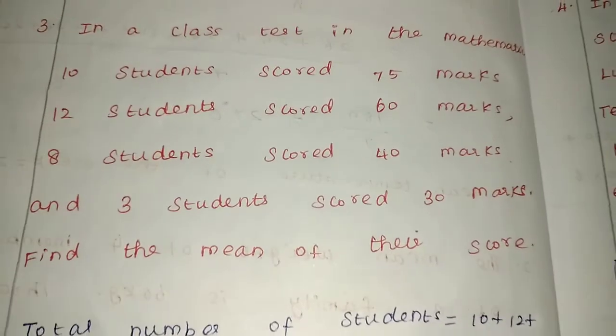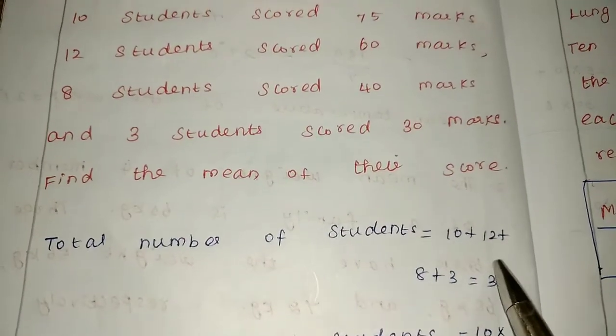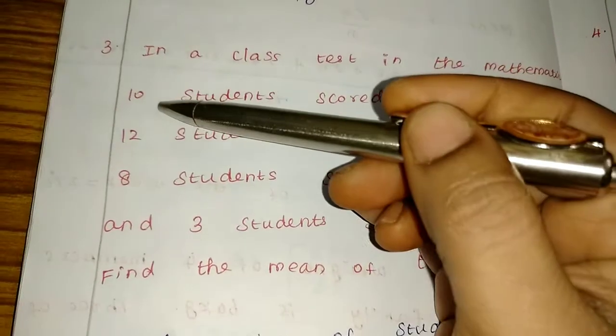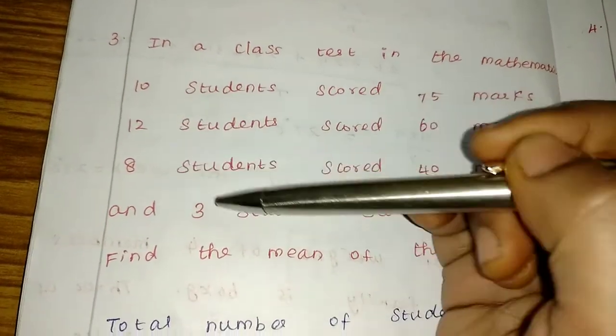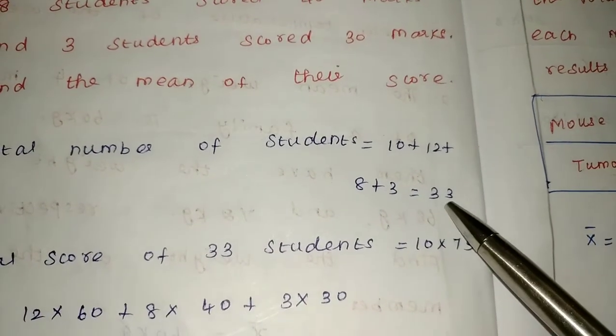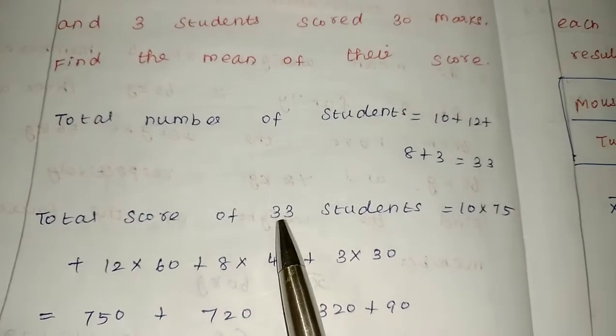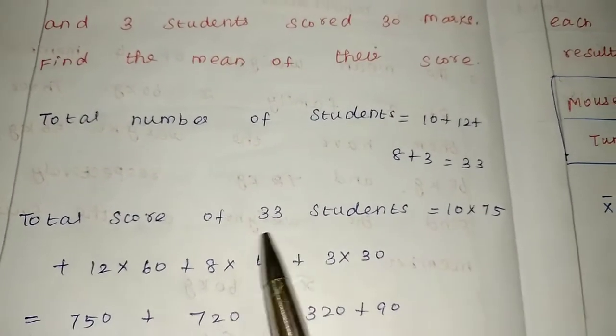First, what do we do? Calculate the total number of students. So here are students 10, 12, 8, 3. So 10 plus 12 plus 8 plus 3. The total is 33. So total number of students is 33.